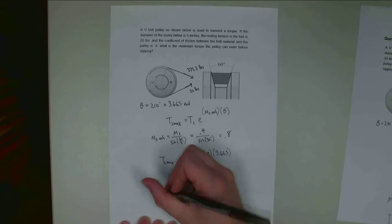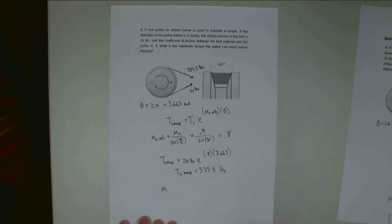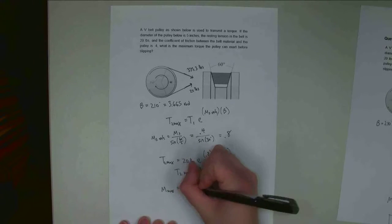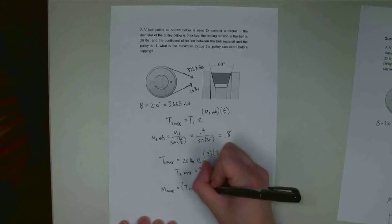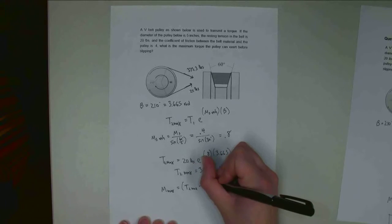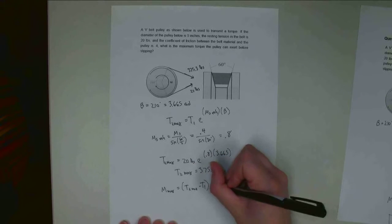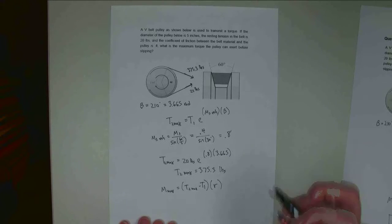And so the moment at this point, I'm going to call M max, is going to be T2 max minus T1 times the radius of my pulley.